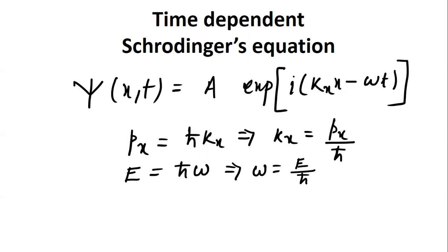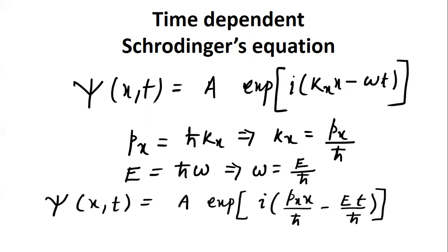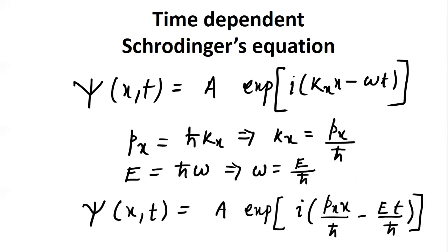Substituting the k_x and ω values into the above equation for the wave function of a particle moving in the x direction, it can be rewritten as psi(x,t) = A·e to the power i(p_x·x/ℏ − E·t/ℏ), with k_x replaced by p_x/ℏ and ω replaced by E/ℏ.